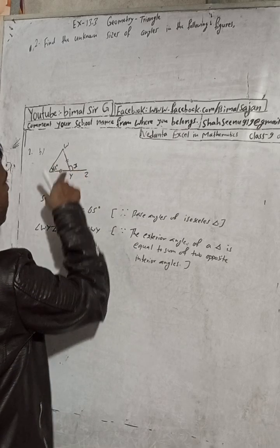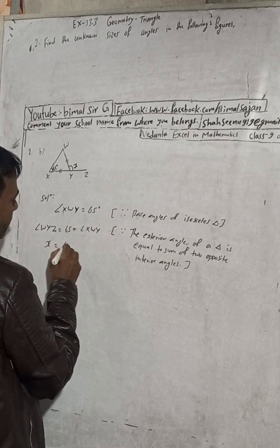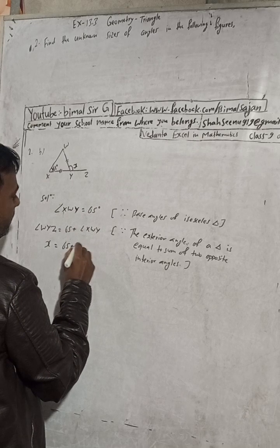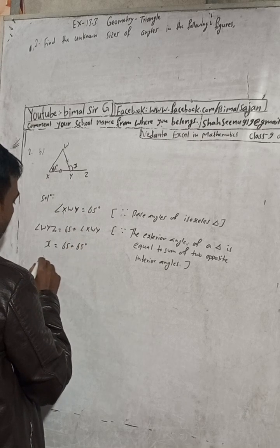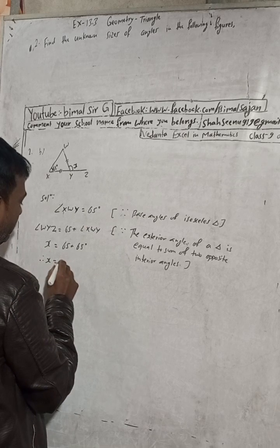So angle X is equal to 65 degrees plus angle WYZ, which is 55 degrees. So now we can add. Therefore, X is equal to 130 degrees.